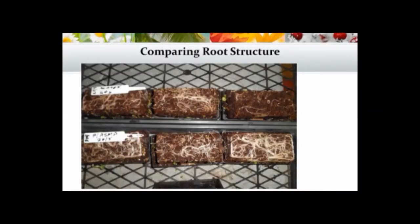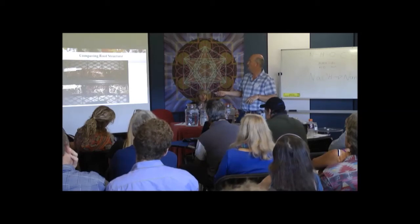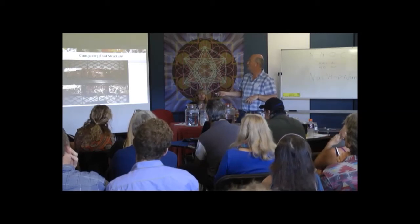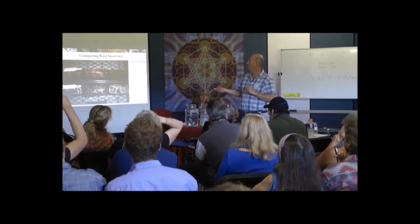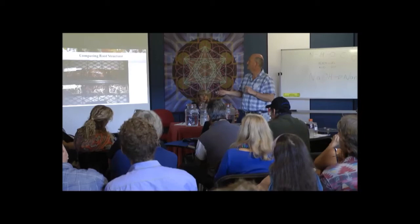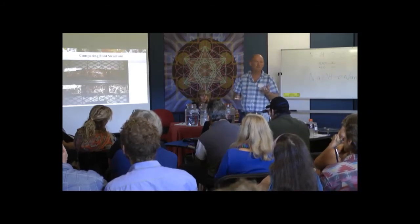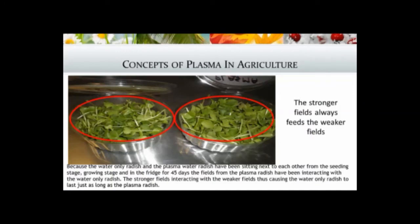We grew micro green radishes — the Icon radish — cutting them off after seven days. In the punnets we turned the roots over to look at the root structure. After seven days, here's the result with normal water, and here's with plasma water — you can see how much better the root structure looks with plasma.